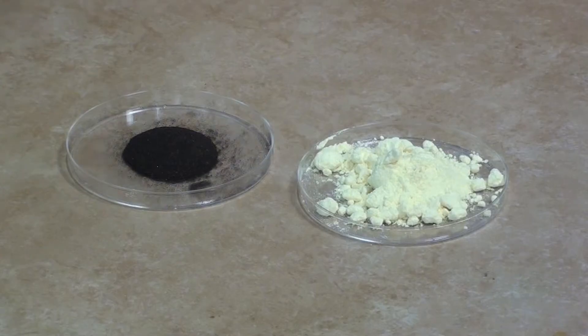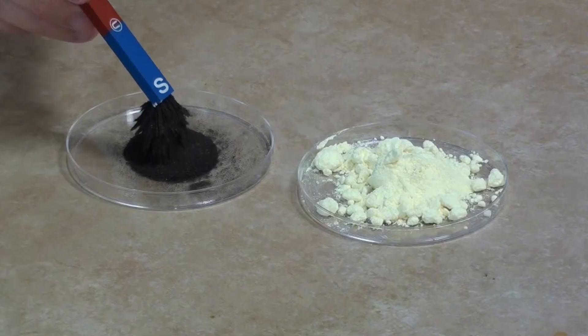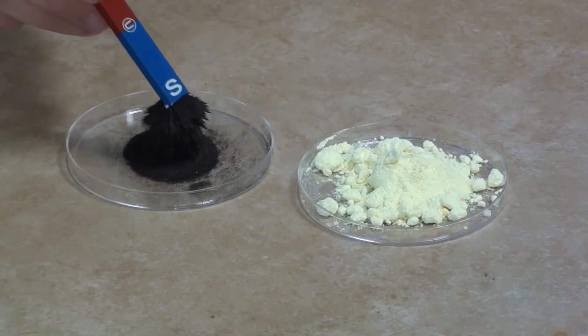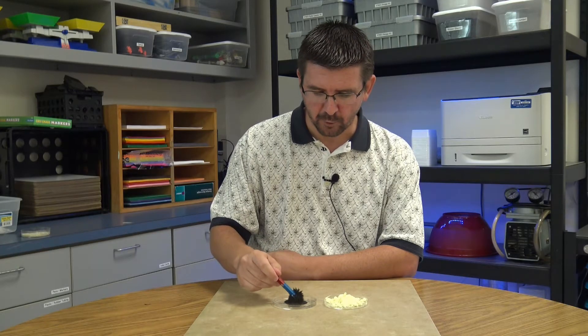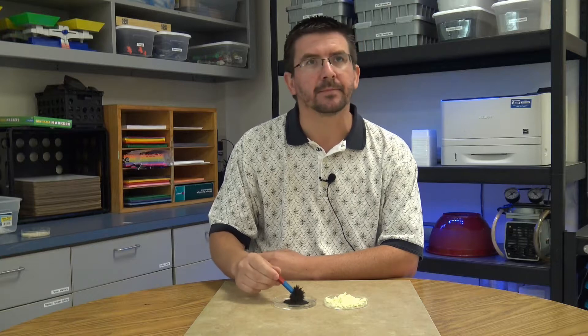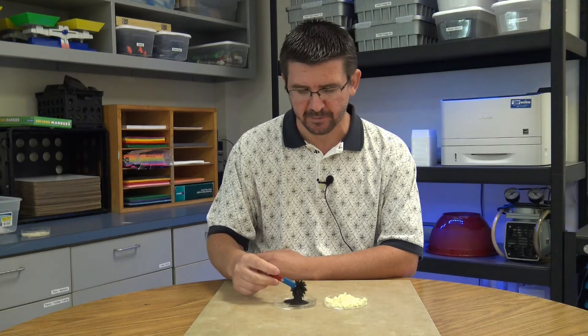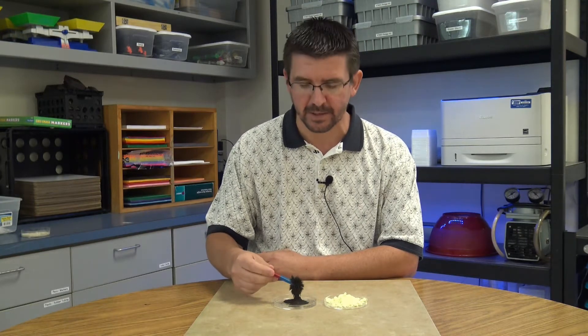But as soon as I put the magnet near the iron, the magnet attracts the iron and it does, as we say, stick to the magnet. So you can see that we're able to use the magnet to pick up the iron filings because of that ferromagnetic property of the iron.